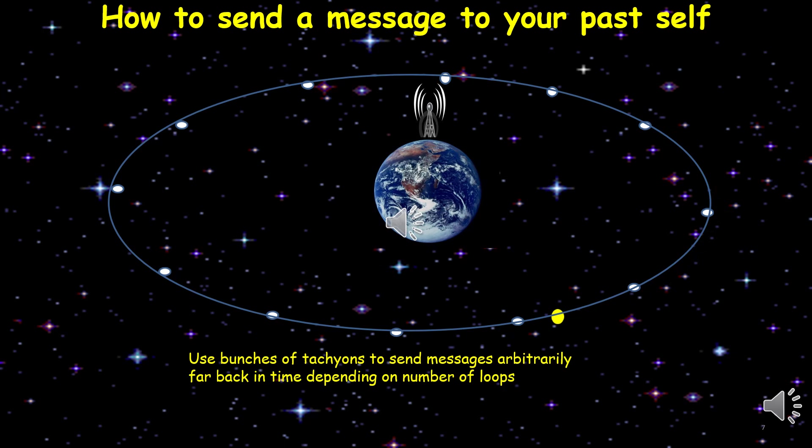Here's how you might use tachyons to send a message to your past self. The scheme uses a ring of orbiting satellites. The tachyon message is first relayed from the tower to the nearest satellite, which instantly relays it to the next one and the next one and so forth, continuing around the ring for many loops. To send this message further back in time, you need to increase the number of loops the tachyons make and also choose a satellite and tachyon speeds appropriately.